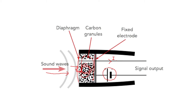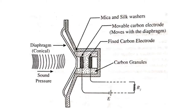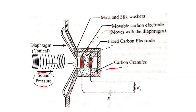We will now show the same thing with a clearer diagram. Here you can see the sound waves which are incident — the sound pressure coming in. This sound pressure hits the diaphragm. One electrode is a fixed electrode whereas the other is a movable carbon electrode. In this chamber you will be having all these carbon granules.